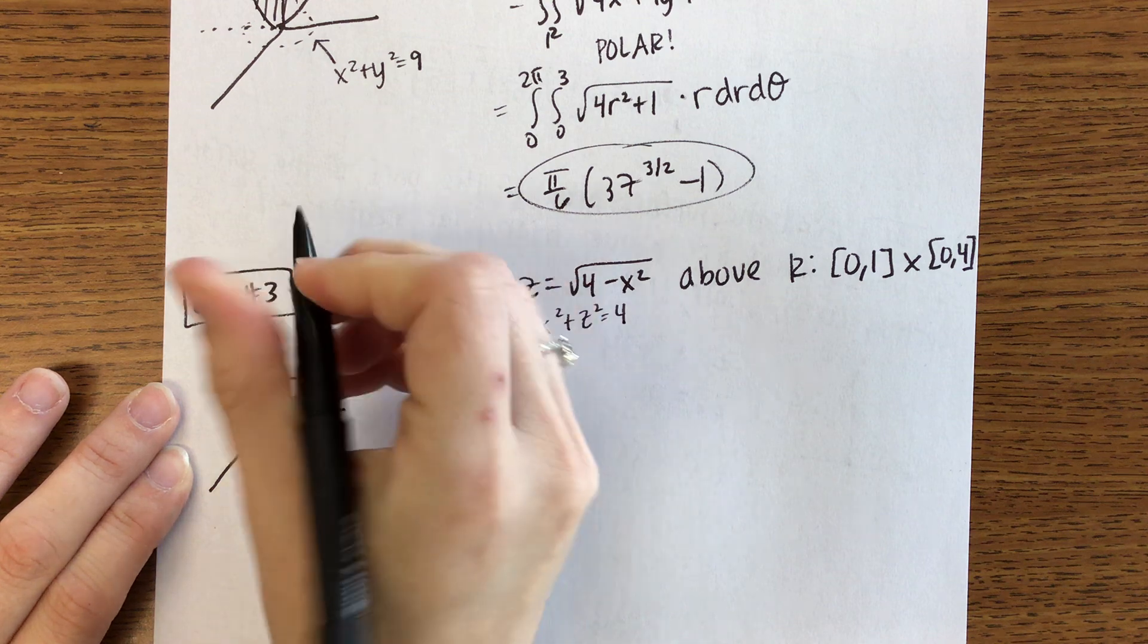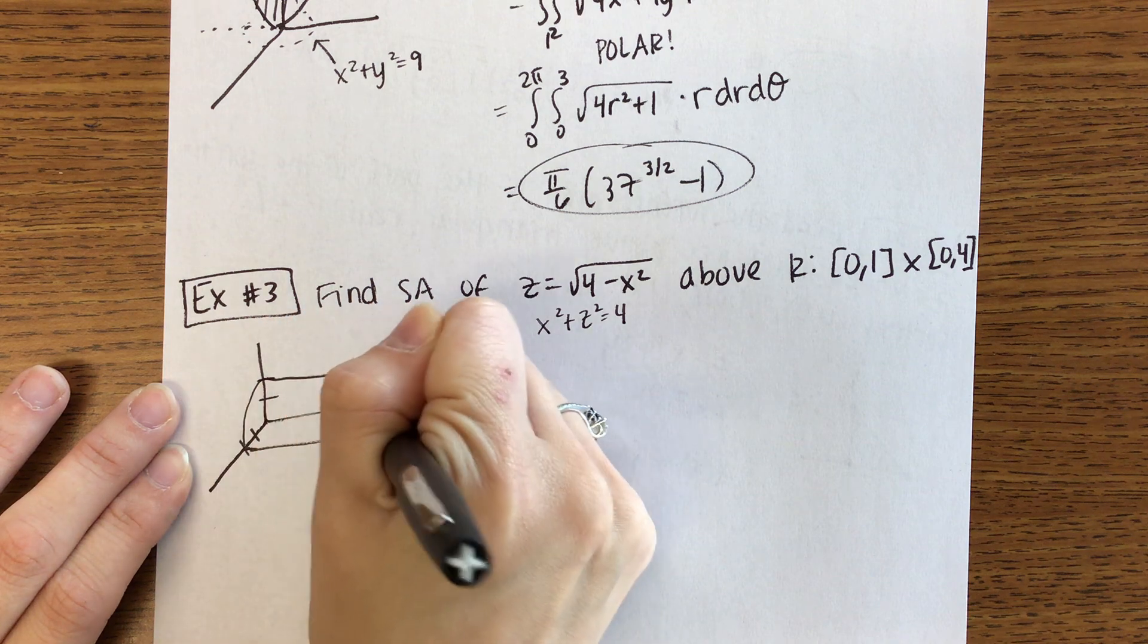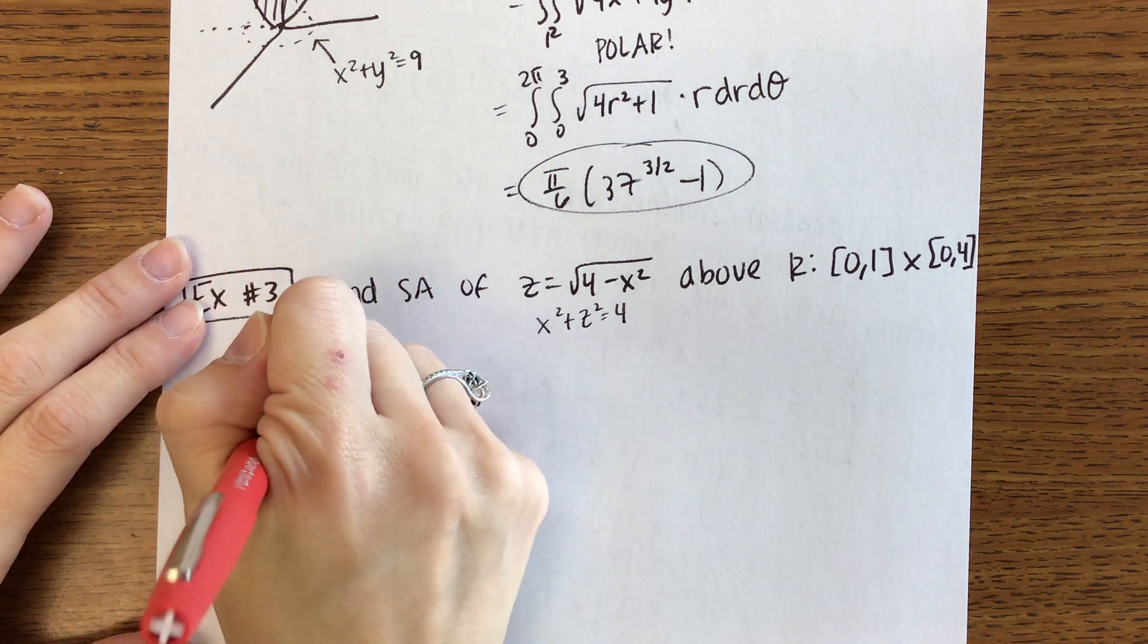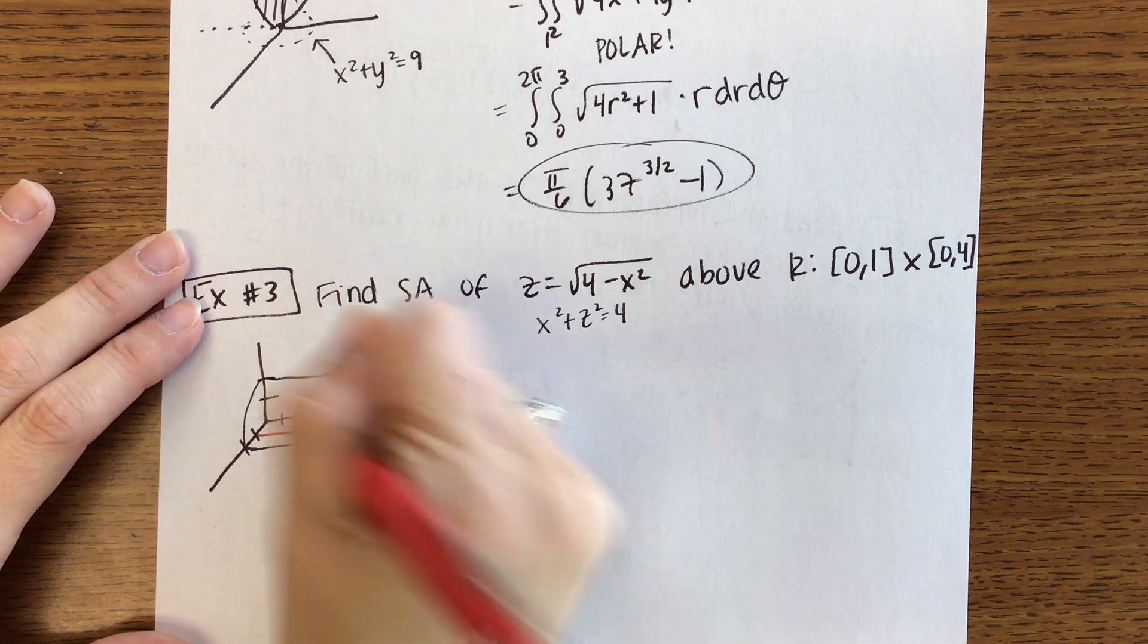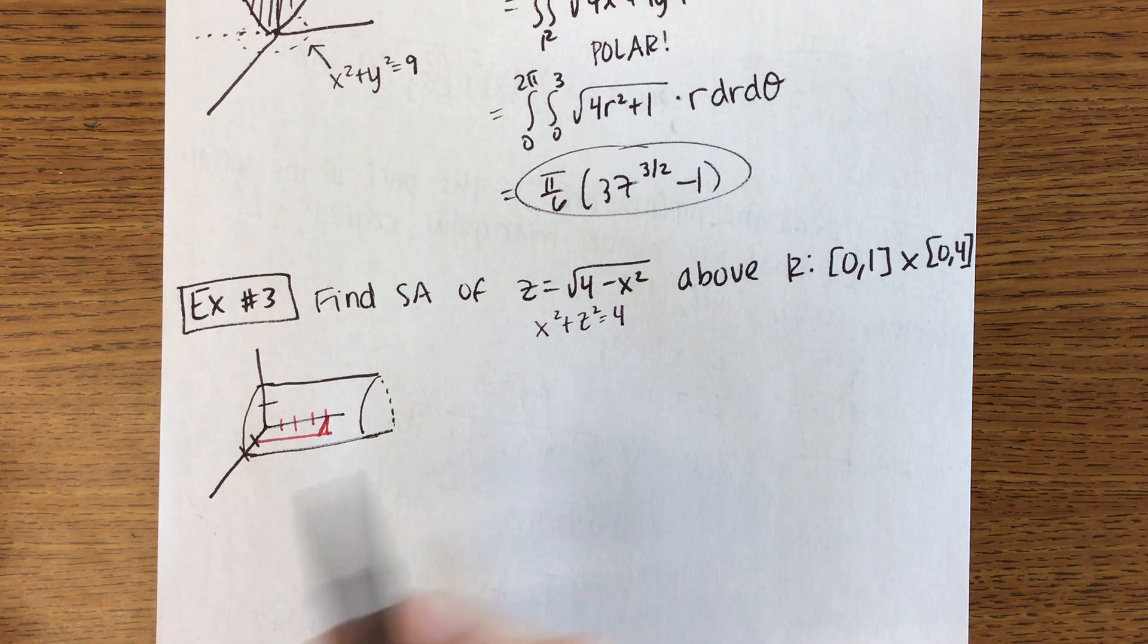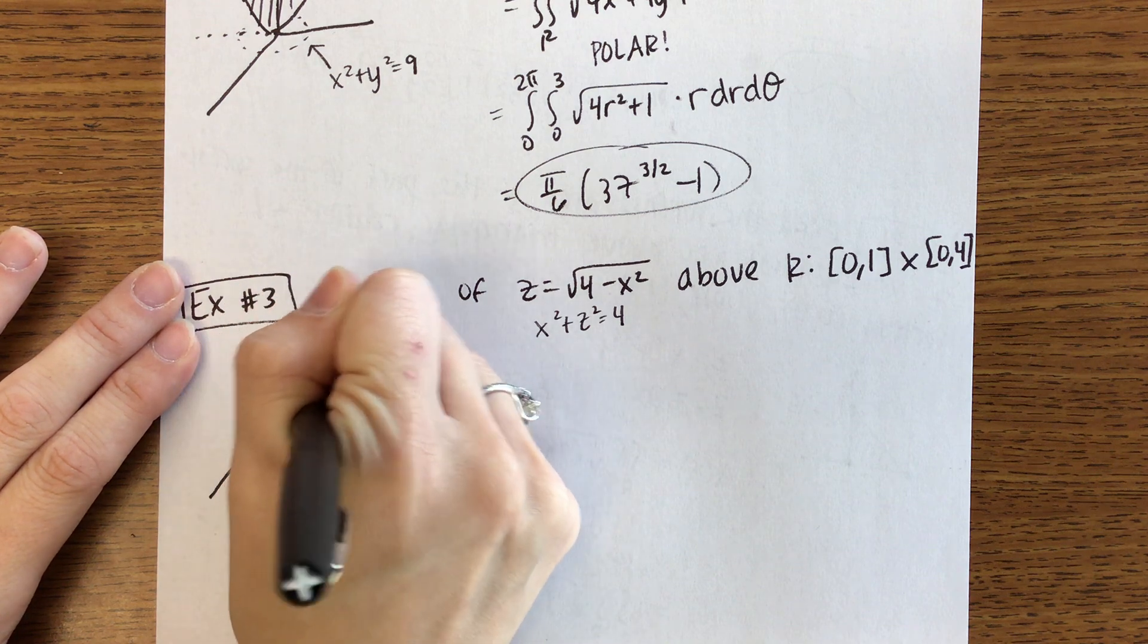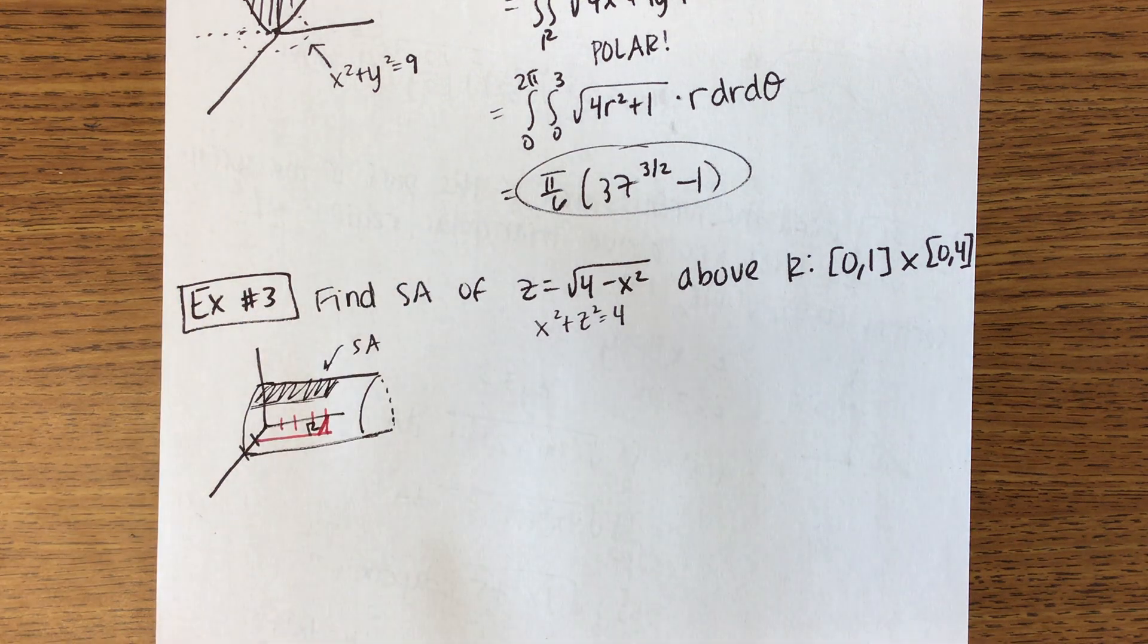Okay and then our region R is X is from 0 to 1 and Y is from 0 to 4. So this is that region R which we are then mapping up onto the cylinder. So this is that surface area that we're looking for when you take your region R and map it up onto the cylinder. You guys with me? So that's just geometrically what it looks like.